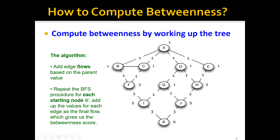After we do this, we can then add the edge flows based on the parent value. For example, the node value of F is 2, therefore the edge flow here will be 2. And the node value of G is 1, therefore the edge below this also has an edge flow of 1, and similarly for all the other edges.